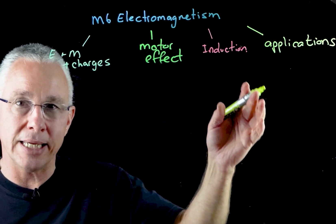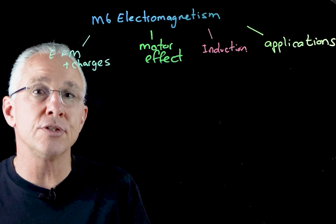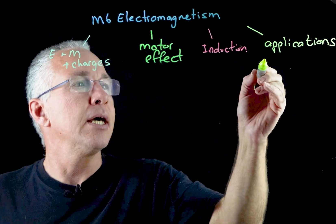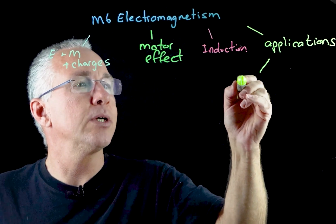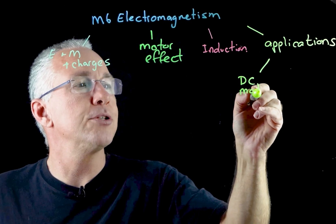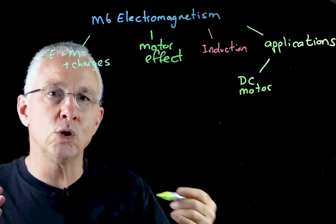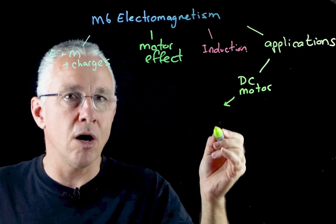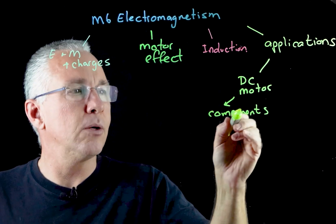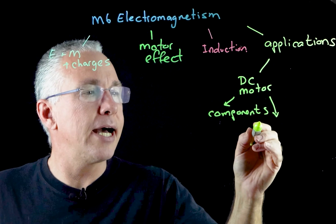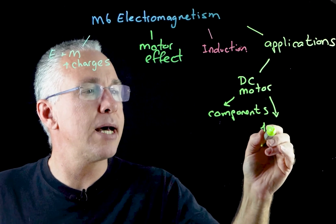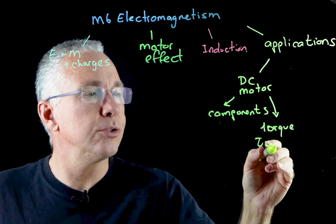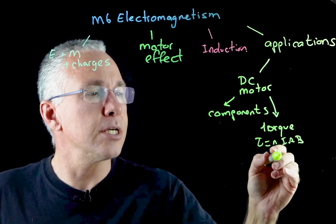In the last section on applications, we're specifically interested in the applications of two devices: the motor and the generator. The first aspect we look at is the simple DC motor, which is an application of the motor effect. You need to be aware of the components and the fact that a torque is generated, with the mathematical formula: torque equals nIAB sinθ.